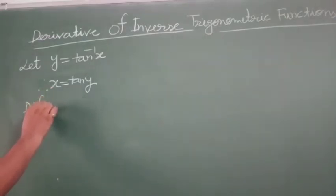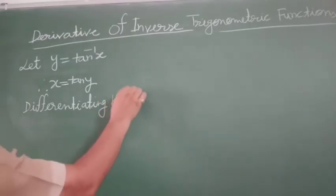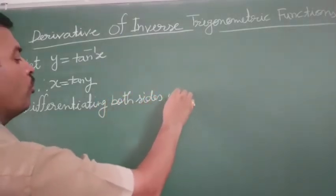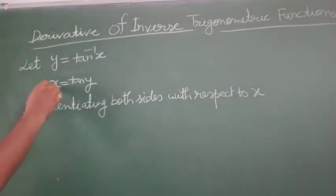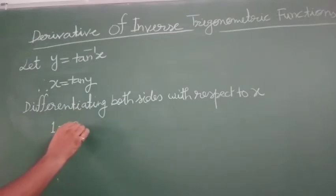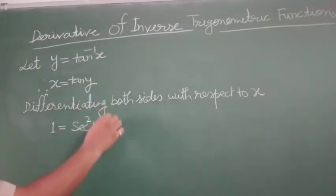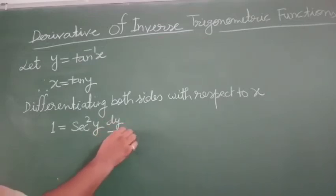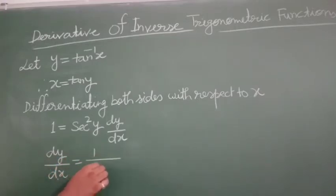Differentiating both sides with respect to x. When we differentiate with respect to x, the derivative of x is 1. The derivative of tan y is sec square y, and y derivative cannot be directly obtained, so we write dy by dx. Therefore dy by dx equals to 1 upon sec square y.